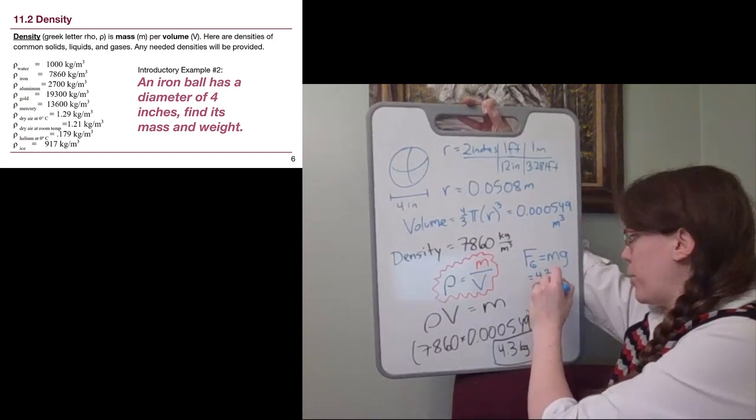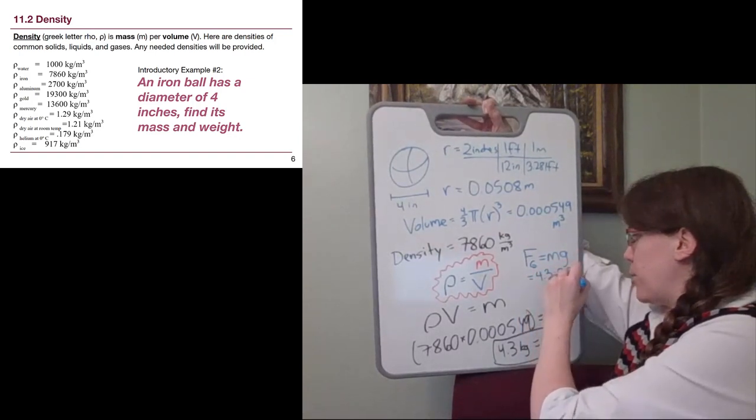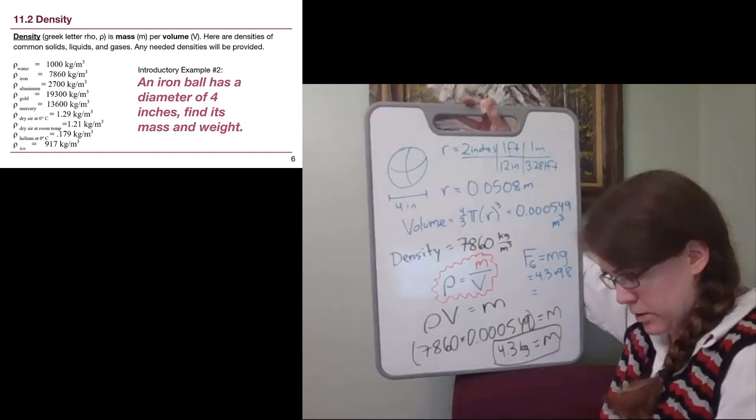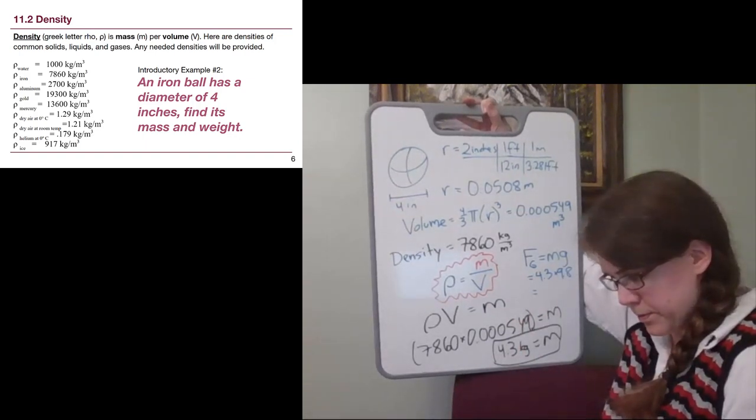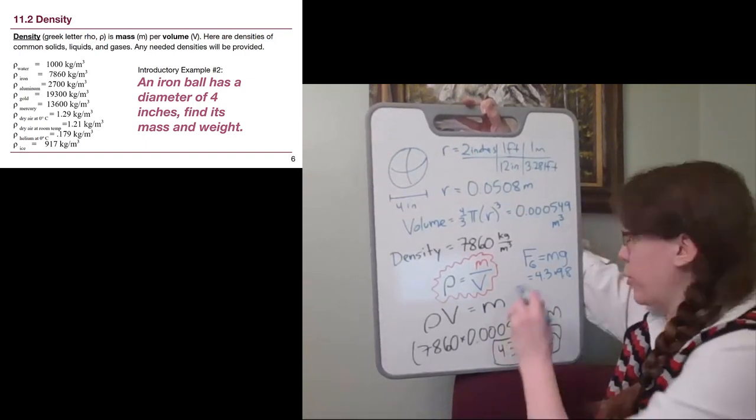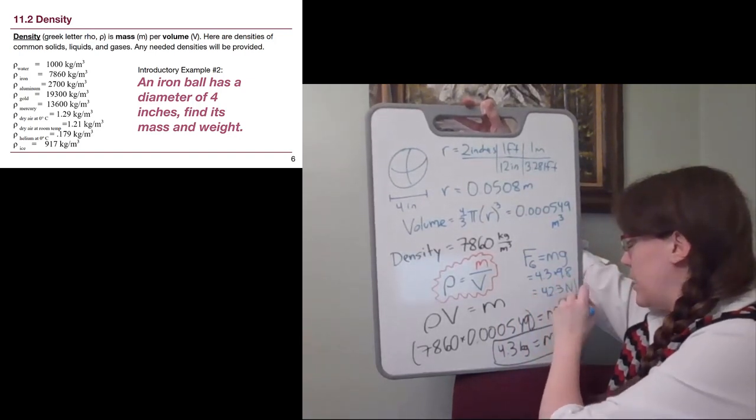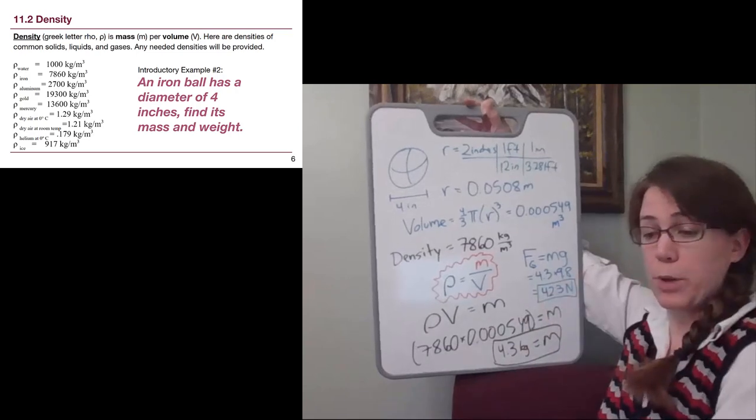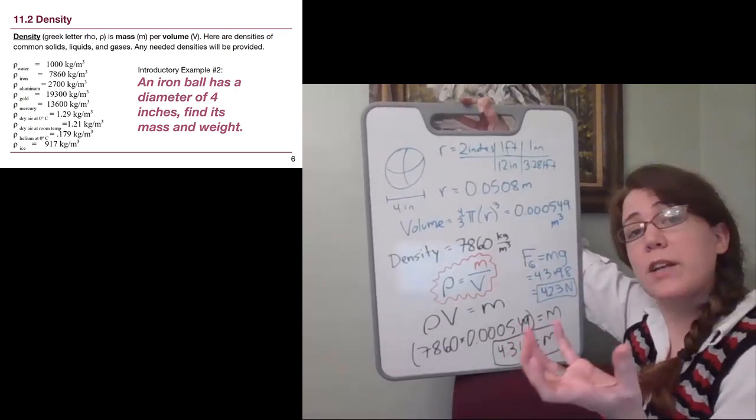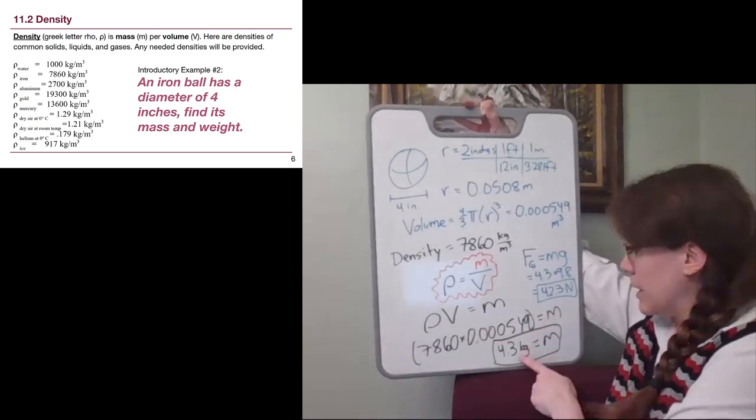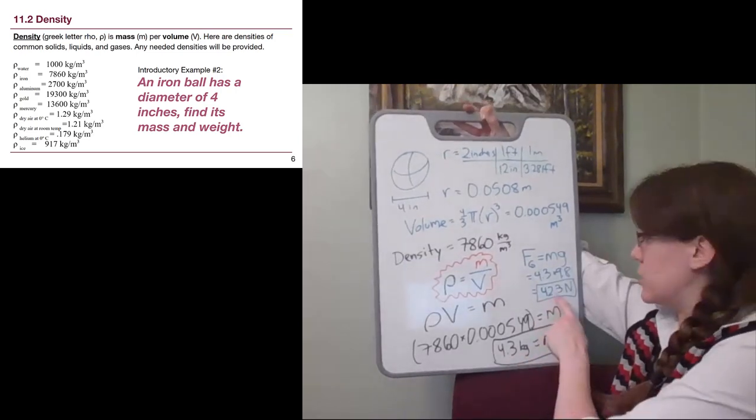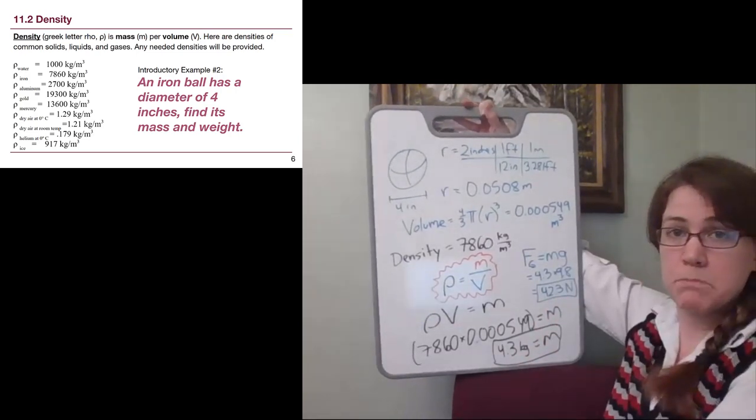That doesn't quite finish the problem. We're asked to find its mass and its weight. This is a chance for us to remember that we know what weight is from back in Chapter 4. Weight is the force of gravity, m times g. So we have 4.3 times 9.8, so we get 42.3 newtons. That's the weight of that iron ball.